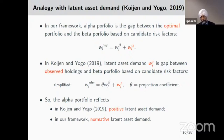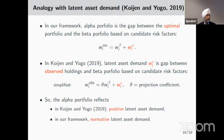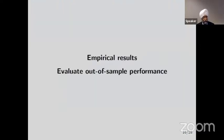We can also link our work to the latent asset demand literature. We provide a normative model for latent asset demand, in contrast to the work of Koijen and Motolese, who provide a positive theory. In our case the alpha portfolio is the residual component not explained by systematic sources of risk in the optimal mean-variance portfolio, whereas in Koijen and Motolese, latent asset demand is what is unexplained relative to observed portfolio weights.